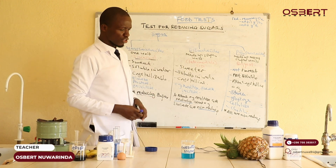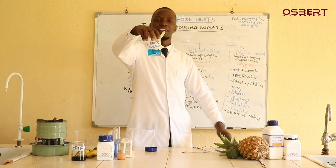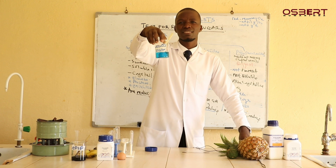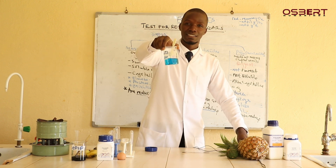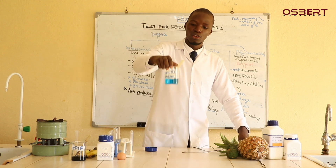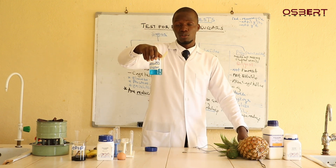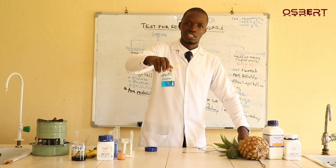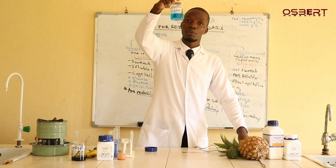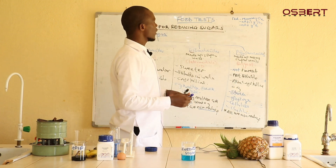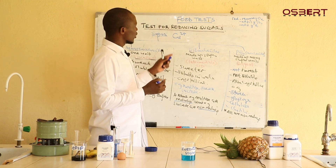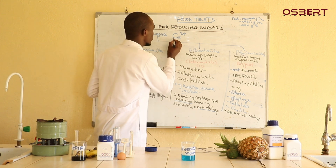Benedict's solution is blue in colour. From chemistry, you may know that copper-2 ions give a blue colour. Whenever copper-2 ions are present in any solution, they appear blue. So Benedict's solution is blue because one of its components is copper-2 ions. Benedict is just the scientist who invented the reagent — the same way you might say Osbert's solution or Martin's solution.